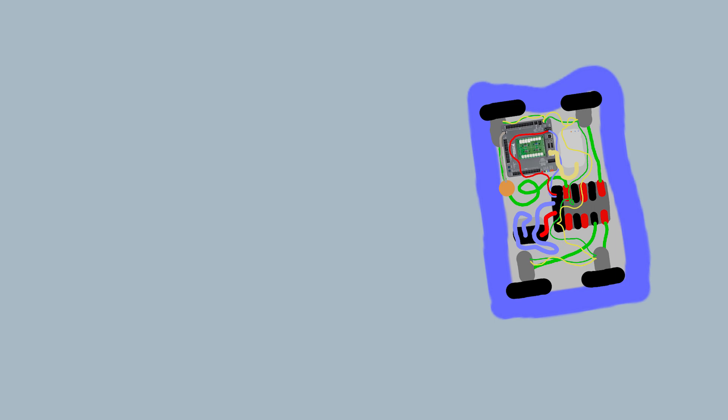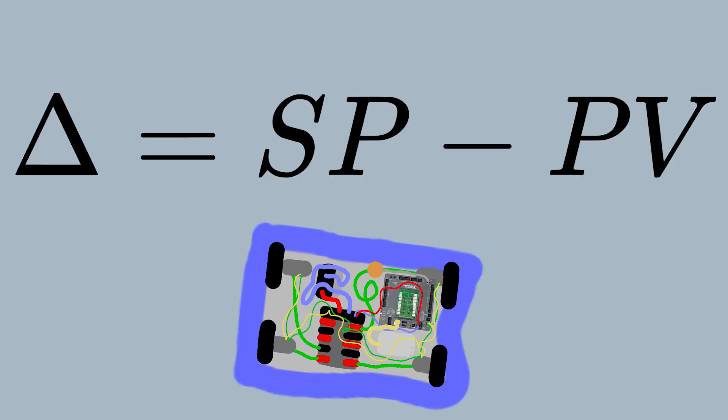Consequently, the position where it is is now the position that it wasn't, and it follows that the position that it was is now the position that it isn't. In the event that the position that it is in is not the position that it wasn't, the system has acquired a variation.